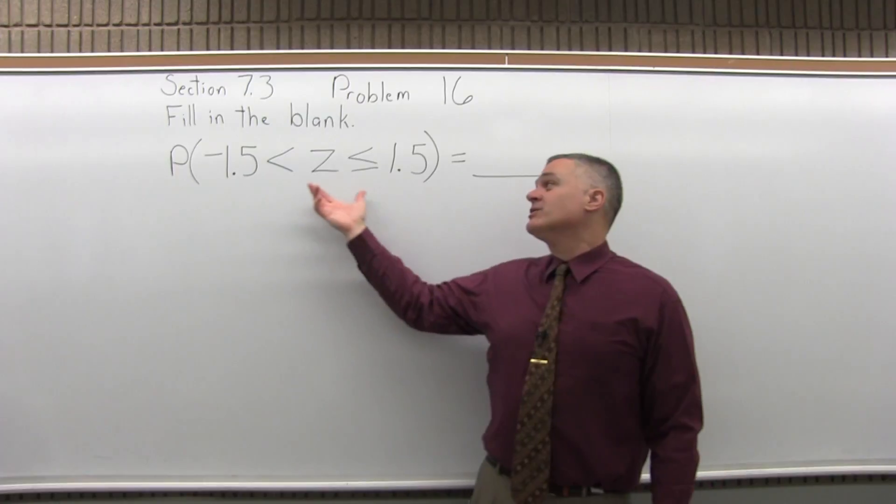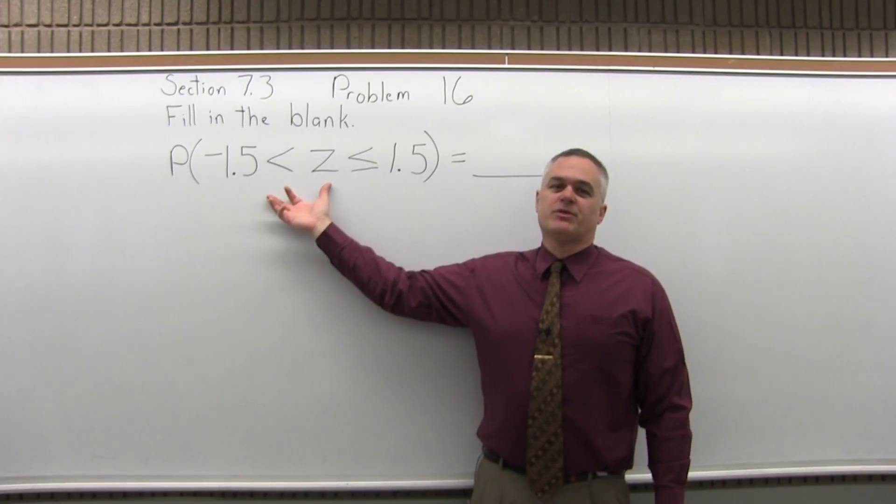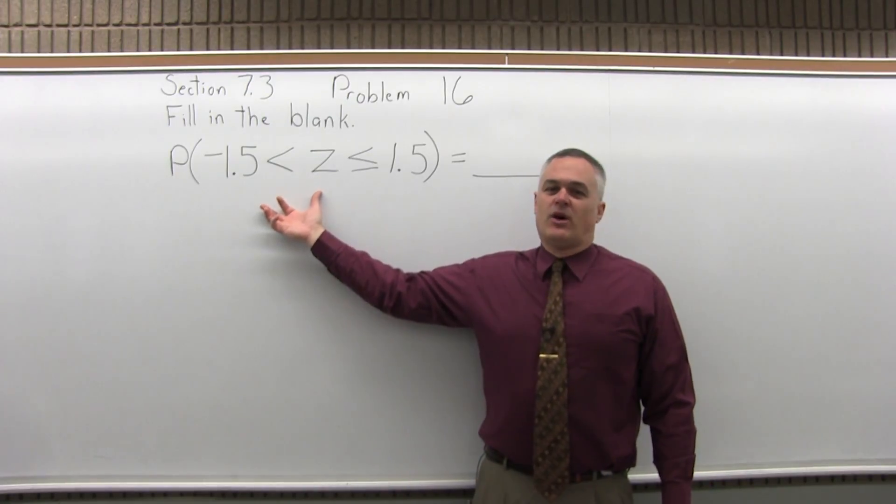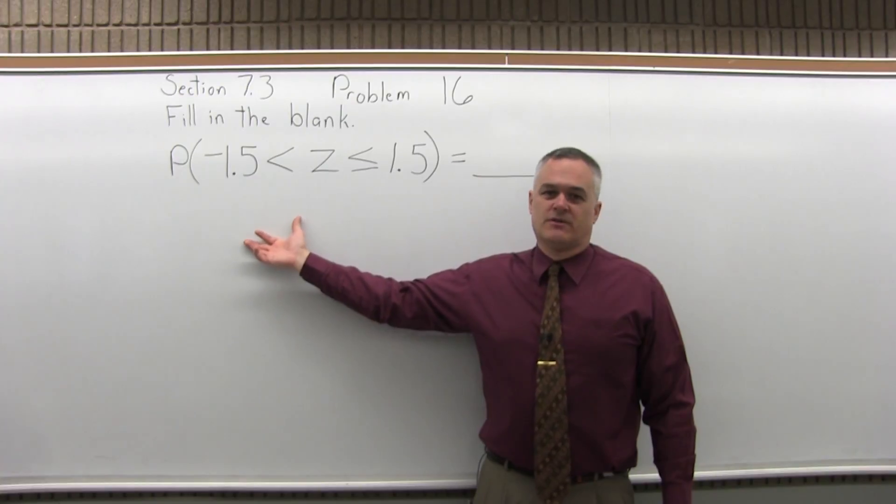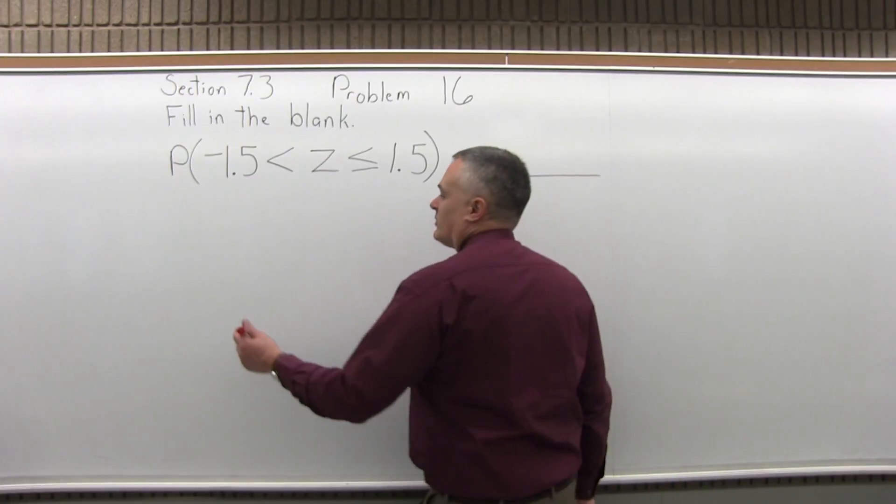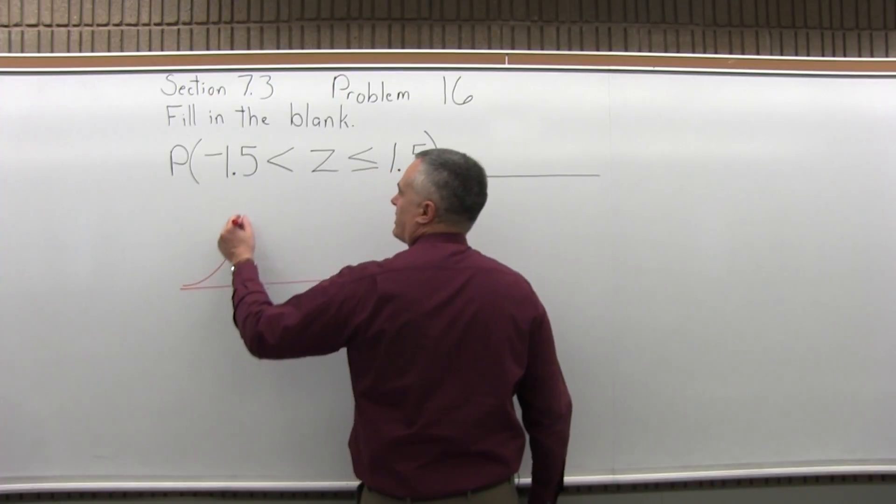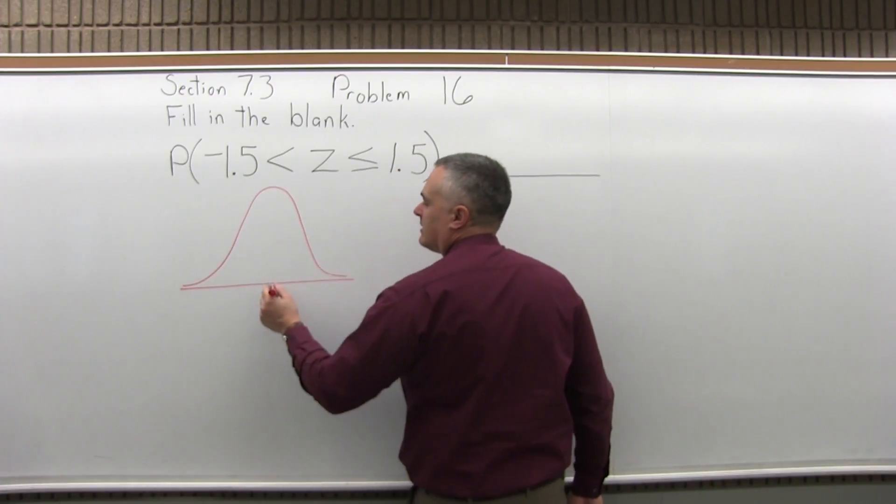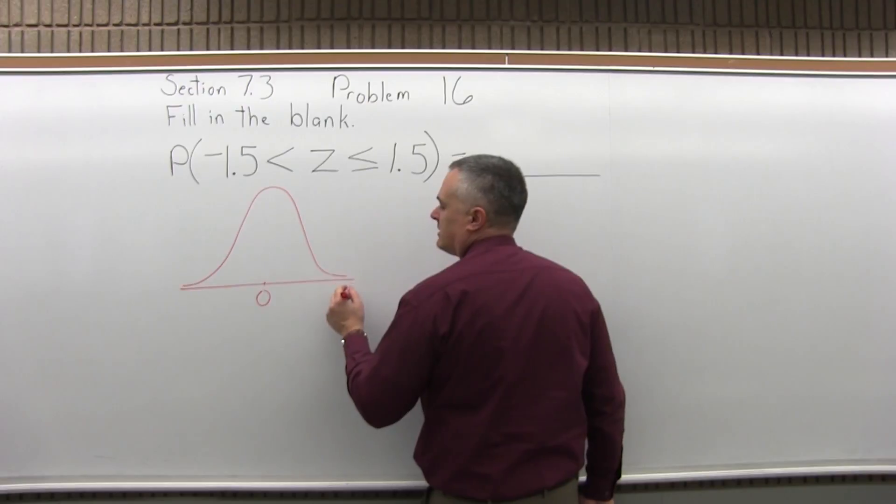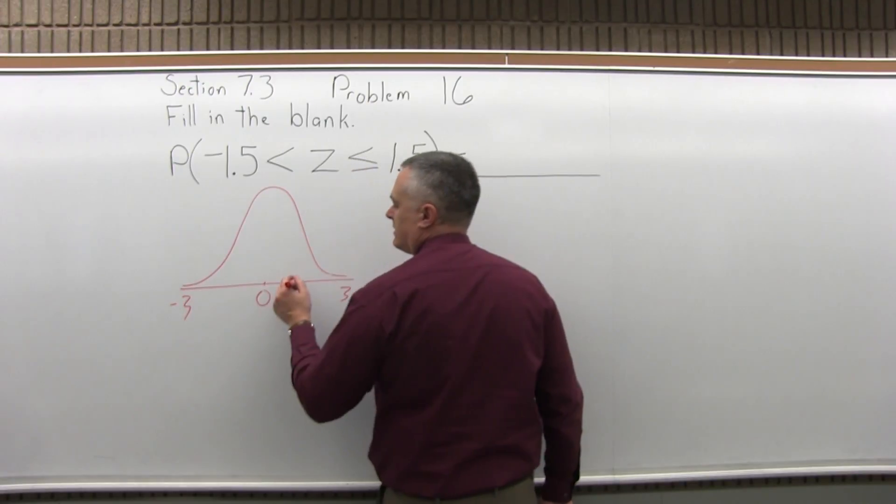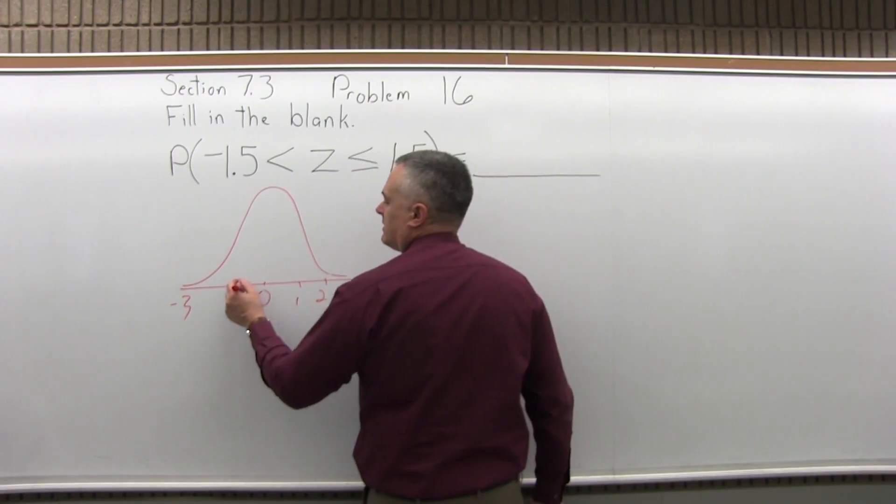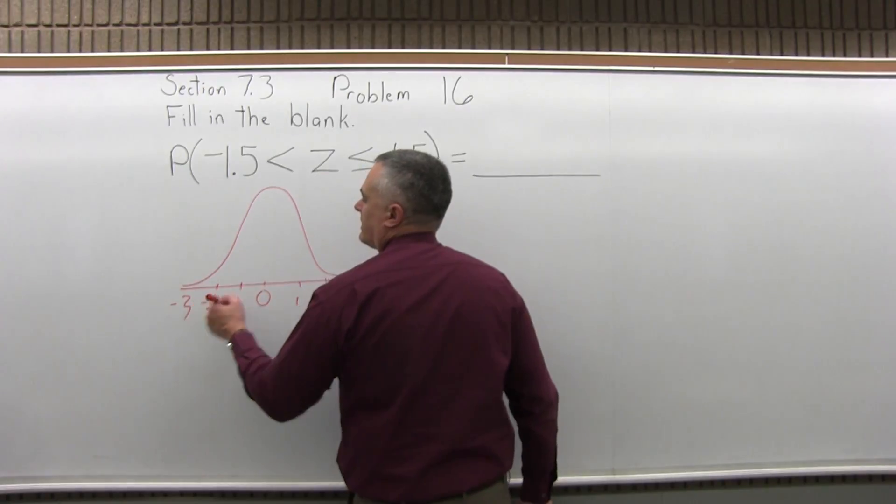Now, I know this is an in-between question. I can just look up the two values in the chart. I know all in-between questions I subtract the two chart values. But I feel that it's helpful to see the drawing. So let me start by drawing a bell curve like this.